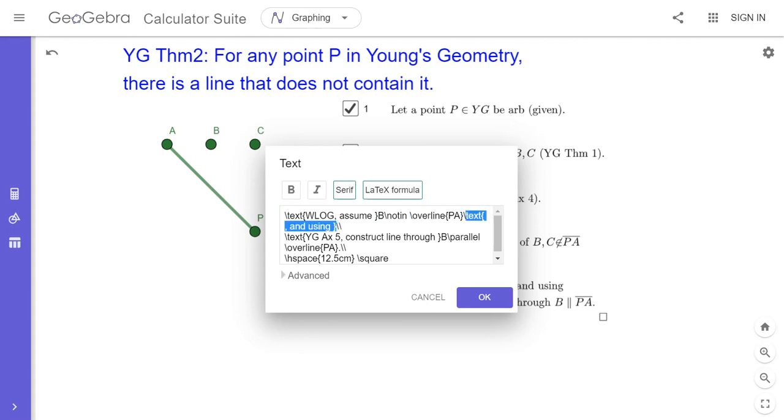This, these are giving me, whoa, I want to hit cancel because that was getting ready to mess up everything. I accidentally grabbed something and dragged it. So the double backslashes are a hard return that's going to force the line to end and start a new line. So you'll see that the YG axiom 5 is the first thing that starts the next line. And then there's another hard return here so that the square is below.